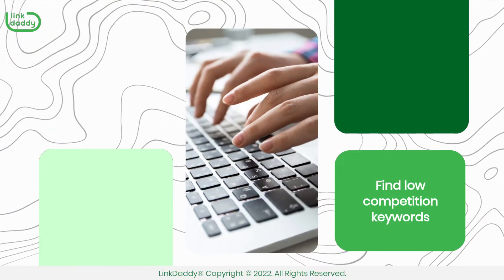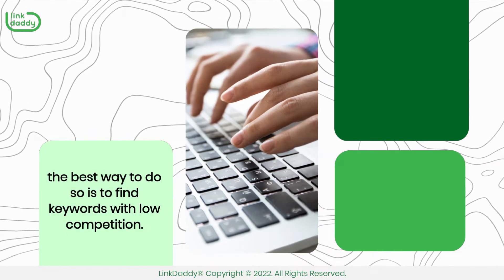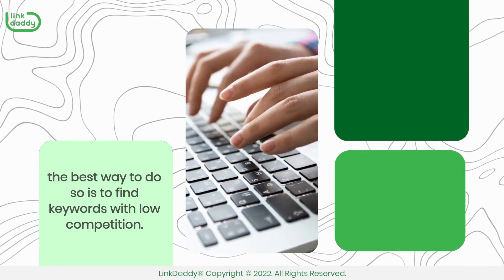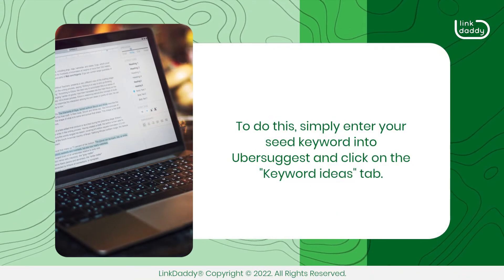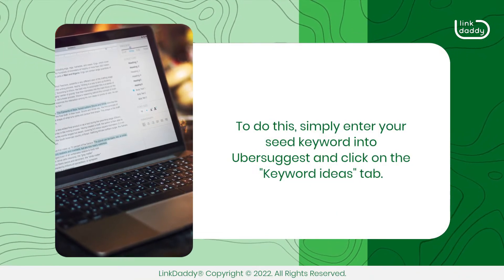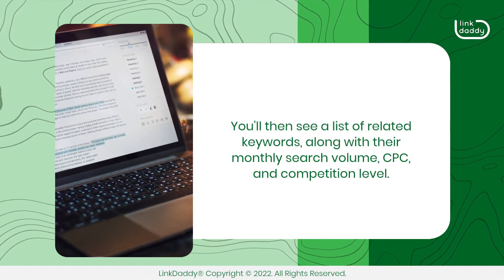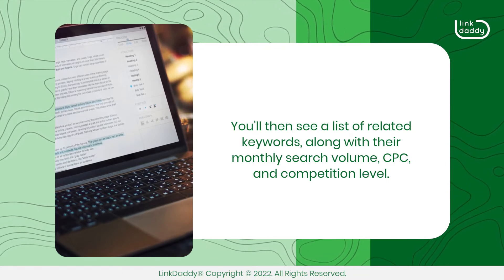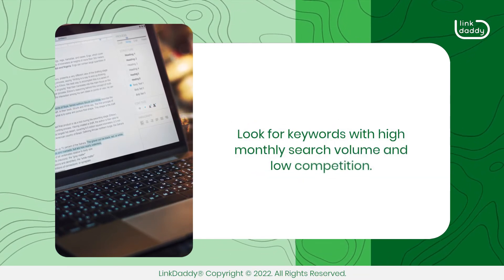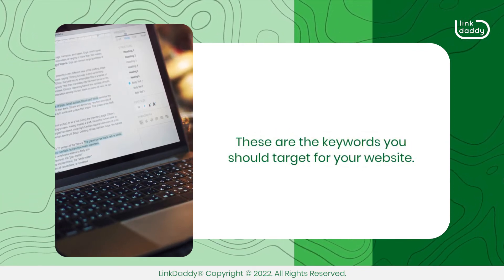Find Low Competition Keywords. If you want to rank your website on SERPs, the best way to do so is to find keywords with low competition. You can use Ubersuggest's Keyword Ideas report to find such keywords. Simply enter your seed keyword into Ubersuggest and click on the Keyword Ideas tab. You'll then see a list of related keywords, along with their monthly search volume, CPC, and competition level. Look for keywords with high monthly search volume and low competition — these are the keywords you should target for your website.